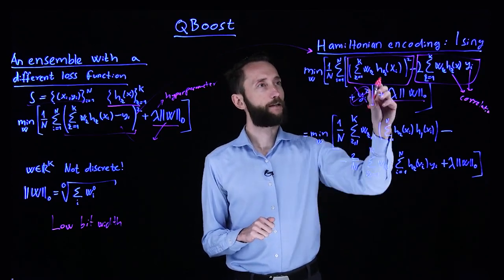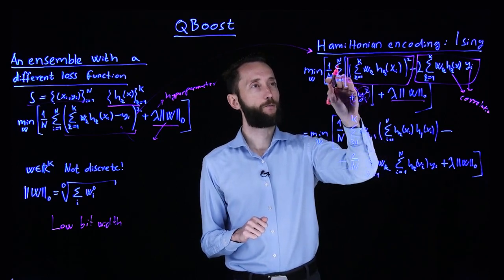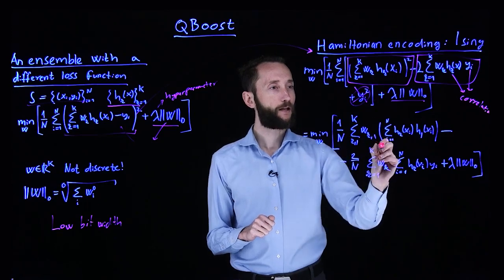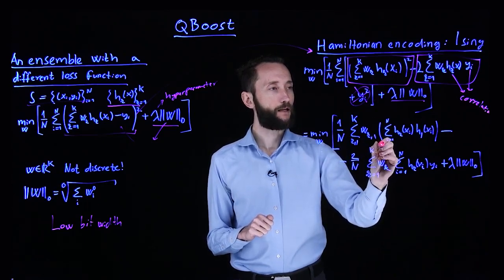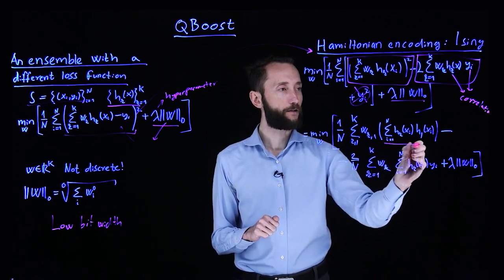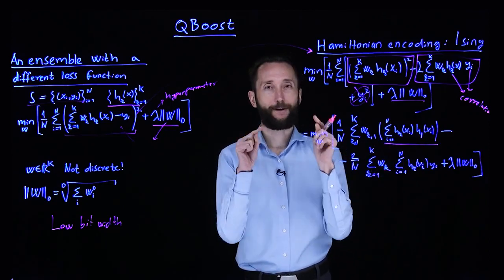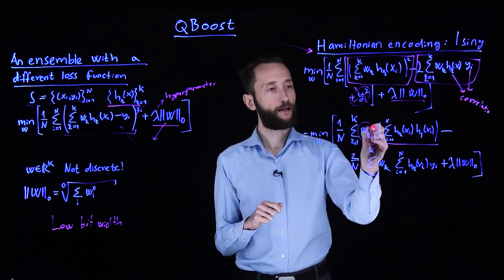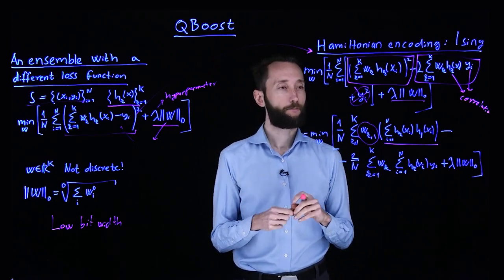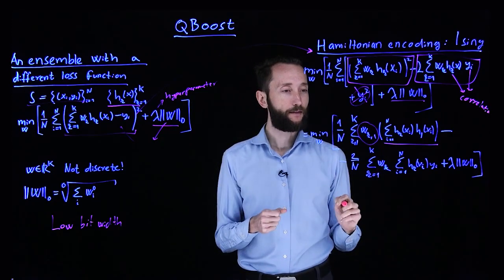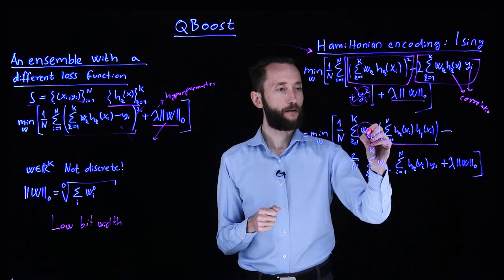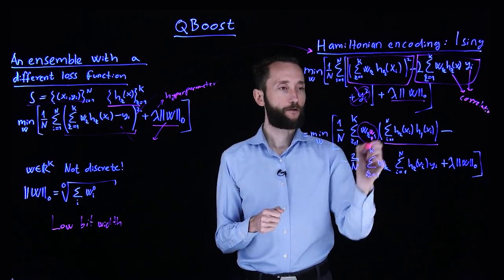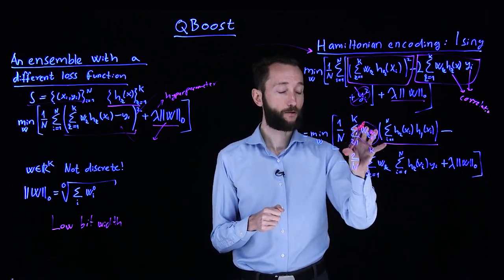So we can continue working on this equation and we can rearrange certain terms and move the sums around. So if I write it this way, the first term, then what I get is I end up with this term which measures the correlation between the individual models.